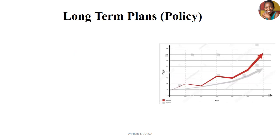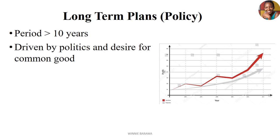Starting with the long-term plan, which is a policy document that takes a very long period of time — at least 10 years. Characterized by period description, these plans take 10 years and above, and most of the time they are driven by political atmosphere and the desire to promote impact indicators for the population.